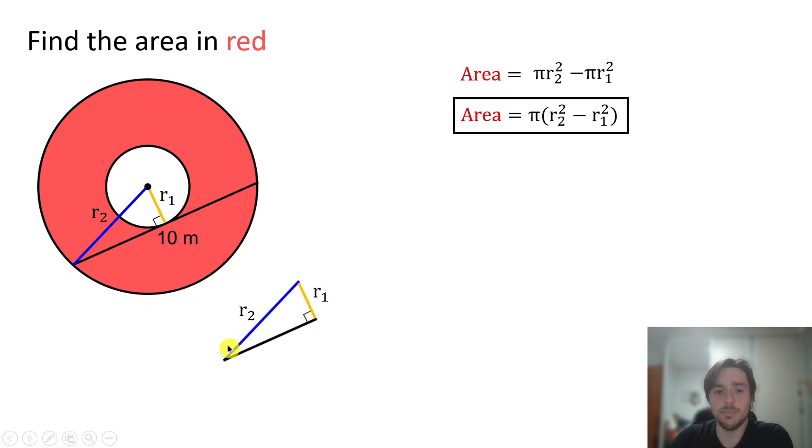Here is r1, the hypotenuse is r2, and here the other side is half of 10 meters, that is 5 meters.